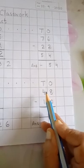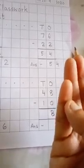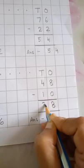Now come to the tens side. On top we have 4. So we count after 1: 2, 3, 4 — from 2 we count till 4, not more than that. After 1: 2, 3, 4. So how many lines are there? 3 lines. So we write here 3. Now our answer is 38.